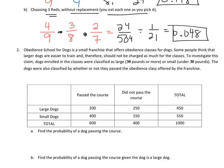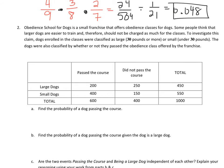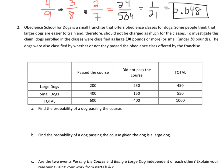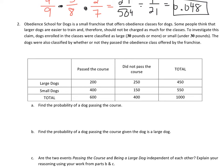The next question is about obedience school for dogs, comparing small dogs and large dogs, and whether or not they pass the course. So the first one says, find the probability of a dog passing the course. So all I care about is passing the course. There's no condition, so it would be just six hundred over a thousand. As a decimal, this would be 0.6.